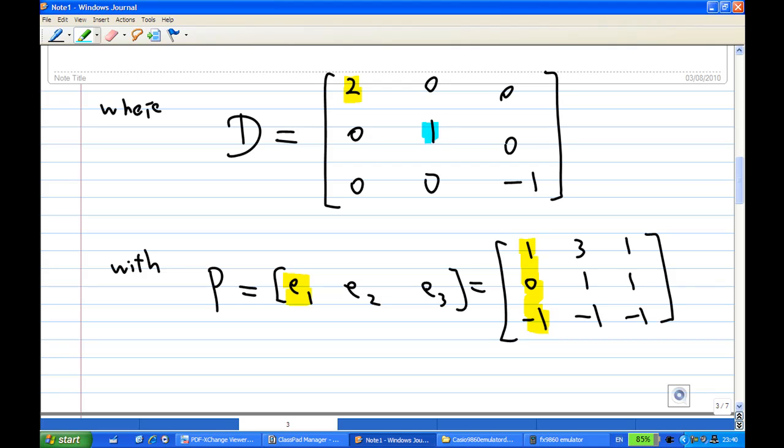And 1 in the second column is the eigenvalue for E2, which is 3, 1, minus 1. And minus 1 in the third column is the eigenvalue for E3, which is 1, 1, minus 1.